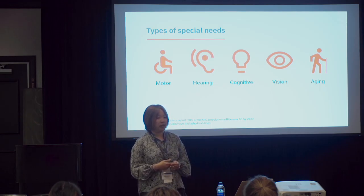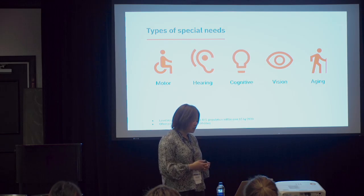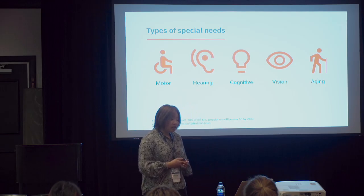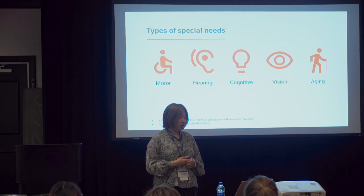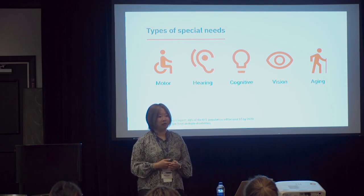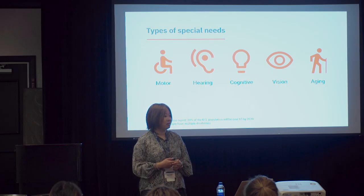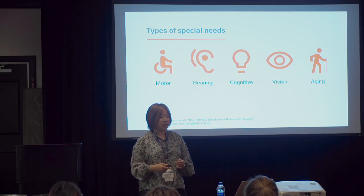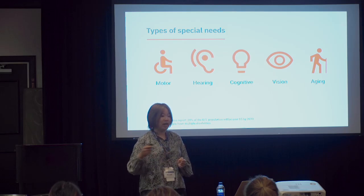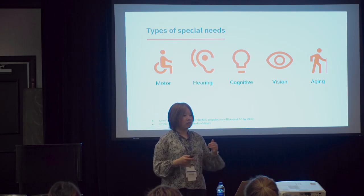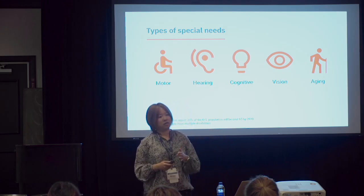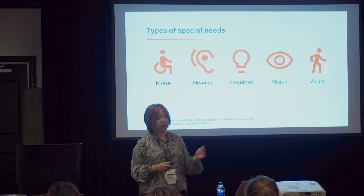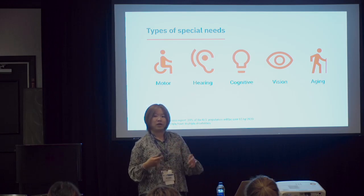The aging population is growing very fast. According to a Level Access report, in less than 11 years, 20% of Americans will be over the age of 65. That's a big number you have to start thinking about now. How will seniors interact with your digital product? Today kids can search YouTube on their own, but imagine 10 years later when seniors are all on smartphones.